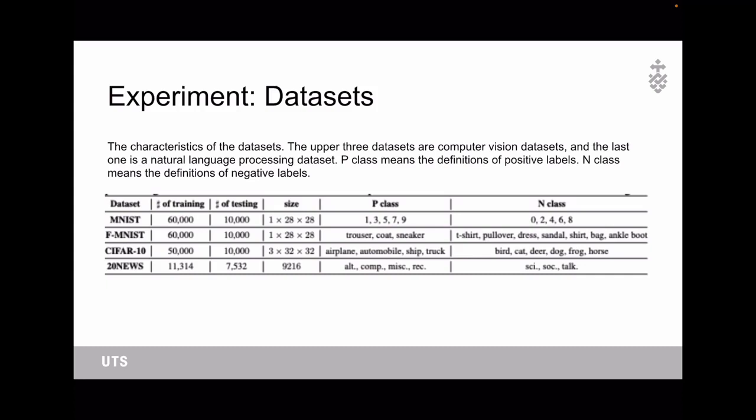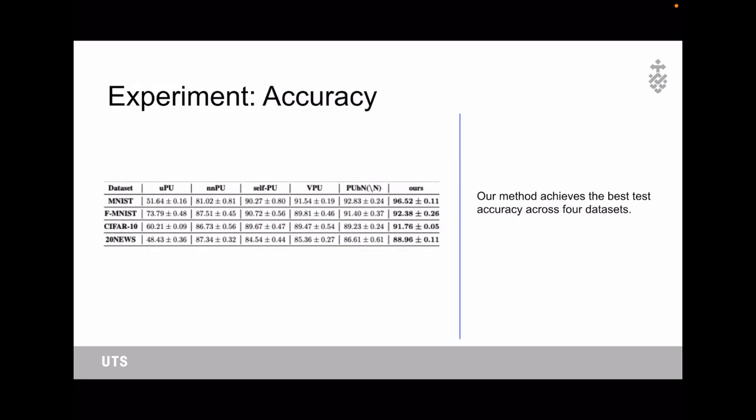First, this is the characteristics of the dataset. The upper three datasets are computer vision datasets, and the last one is a natural language processing dataset. The p-class means the definition of the positive labels, and the n-class means the definition of the negative labels.